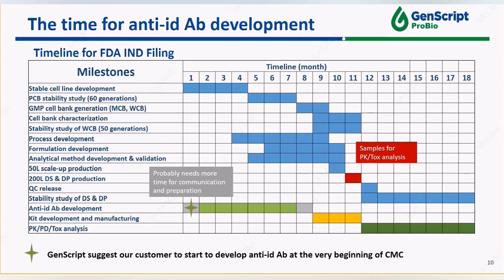Generally speaking, the preclinical development of a therapeutic antibody includes roughly 12 to 15 months of lead discovery and another 15 to 18 months of CMC process development. It is better to give 6 to 9 months ahead of time for the generation of anti-ID and corresponding assay development, which means you may need to consider starting this work as early as the stable cell line generation stage.